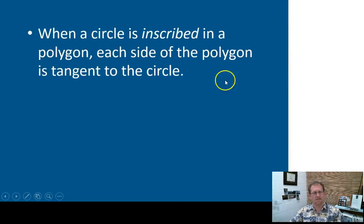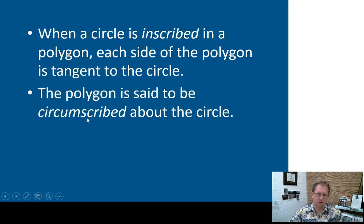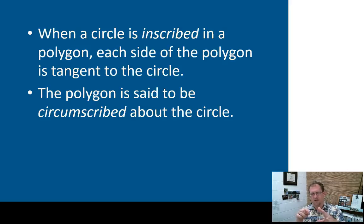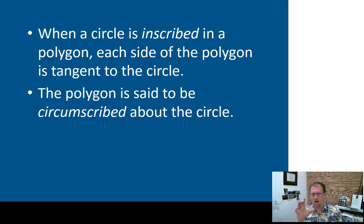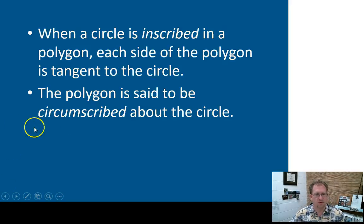When a circle is inscribed inside a polygon, each side of the polygon is tangent to the circle. If you have a shape like a triangle and inscribe a circle into it so the circle intersects all of the lines of that polygon, then all of those lines it touches are tangent points. That's an interesting property of an inscribed circle. The polygon is said to be circumscribed about the circle.